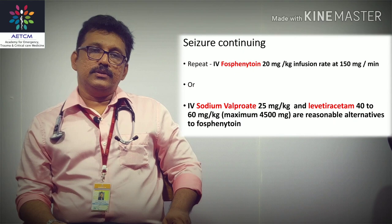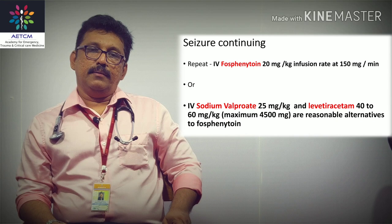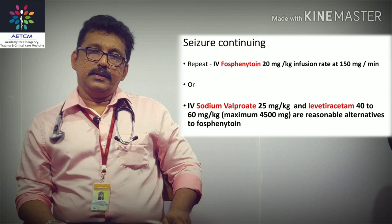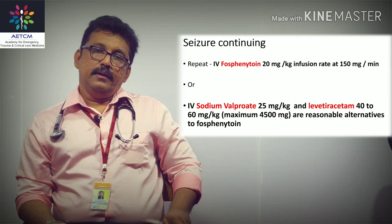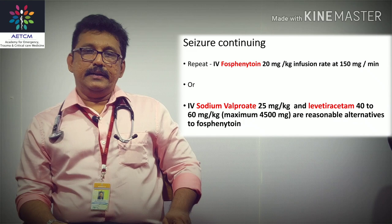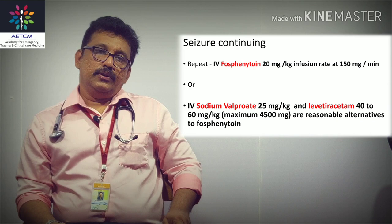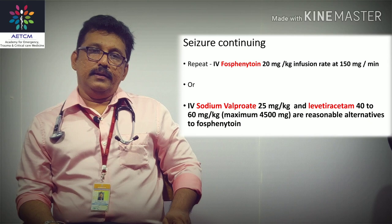Alternatively, sodium valproate 20 to 25 mg per kg body weight can be given as a second-line agent. Levetiracetam is another option, especially in patients with liver disease since it does not alter liver function; the dose is 40 to 60 mg per kg body weight. Either repeat fosphenytoin, sodium valproate, or levetiracetam can be used at this stage.